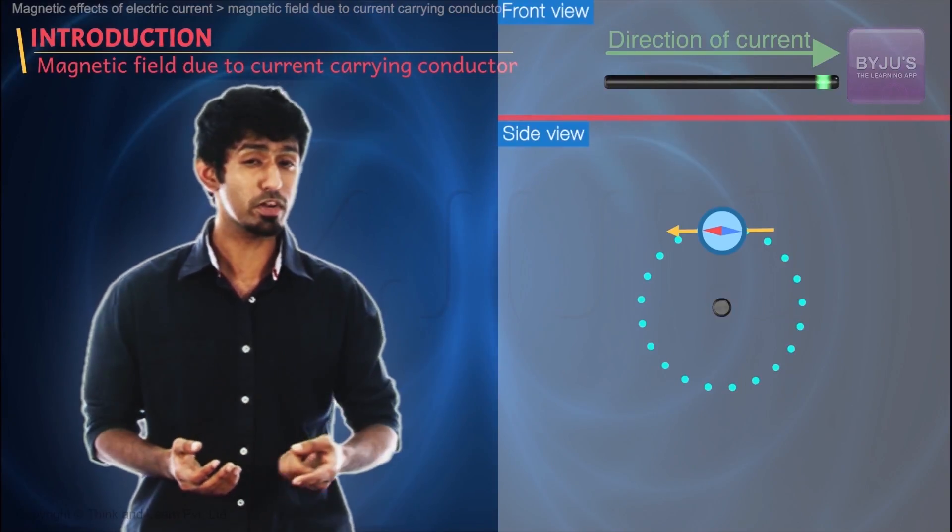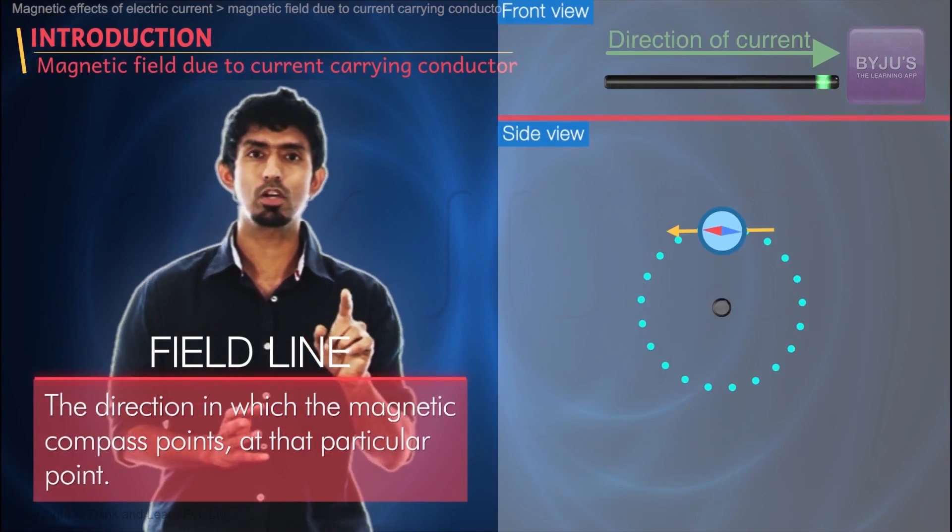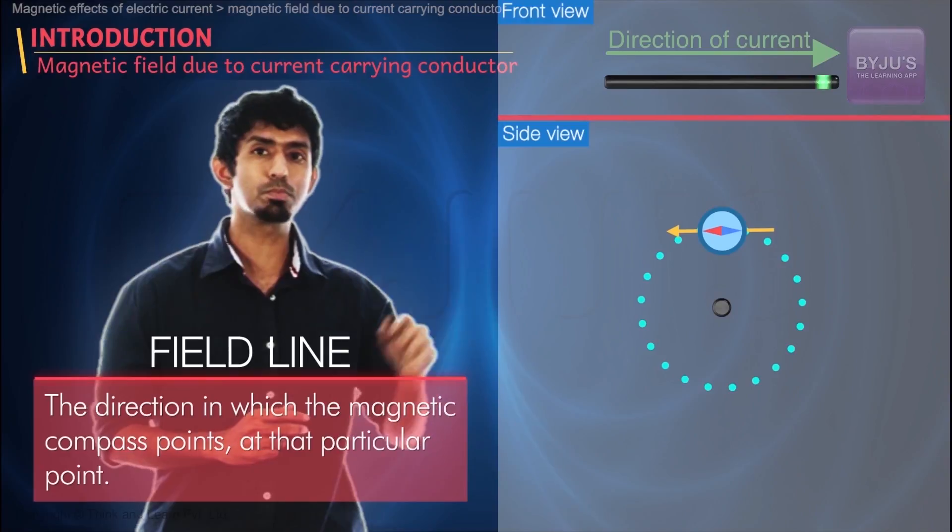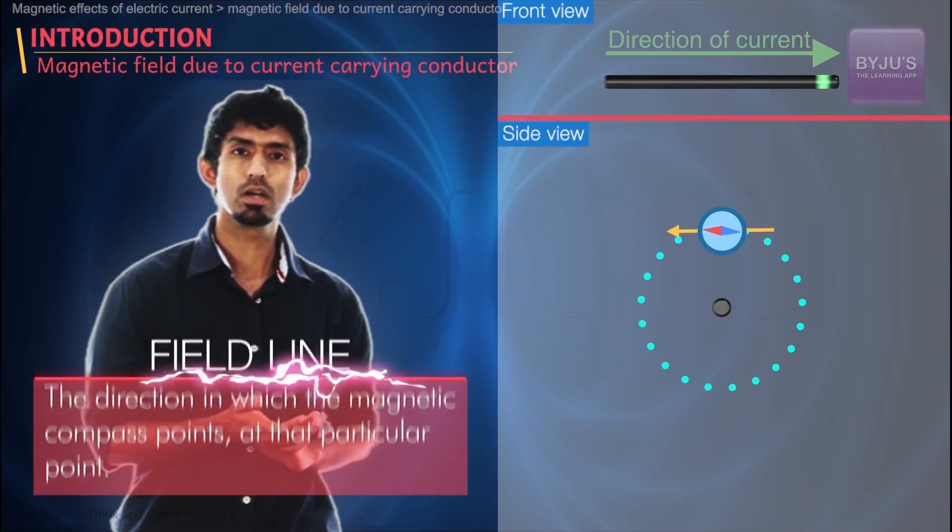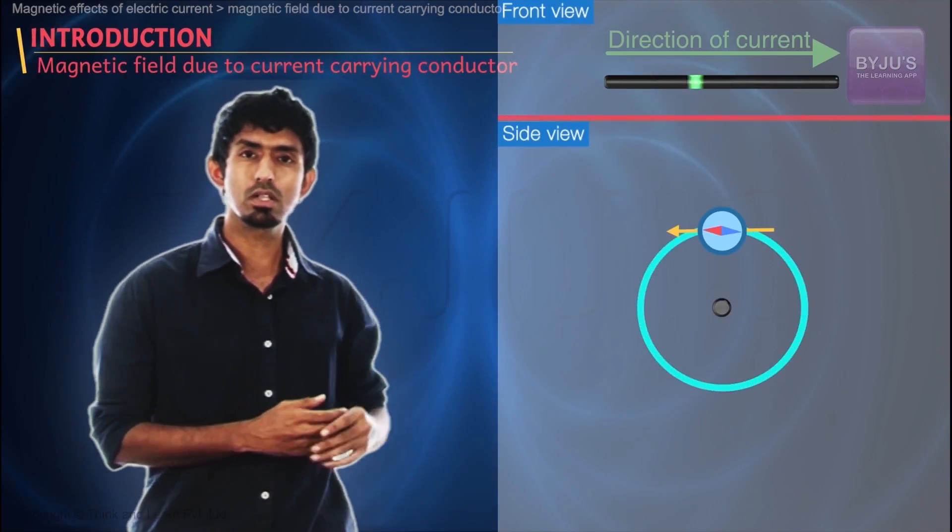And that means these field lines, how do we define a field line? The direction in which the magnetic compass points at that particular point, the north pole of the compass points at that particular point.